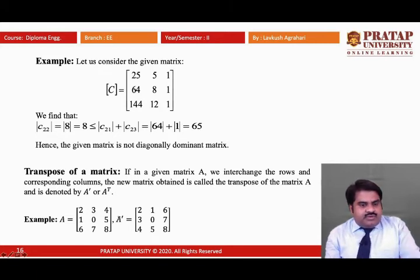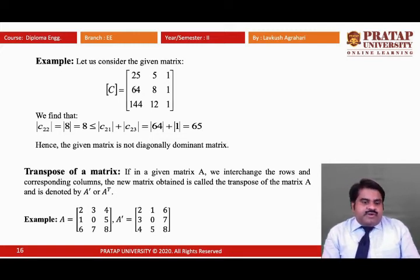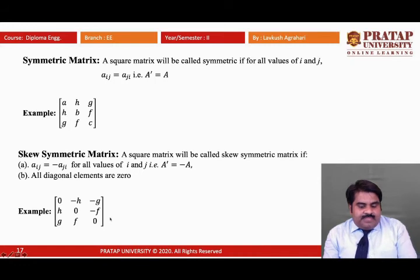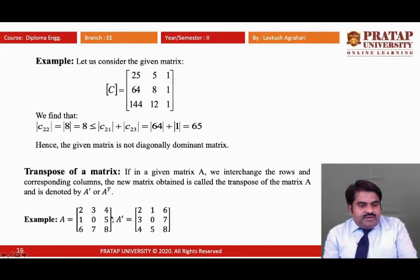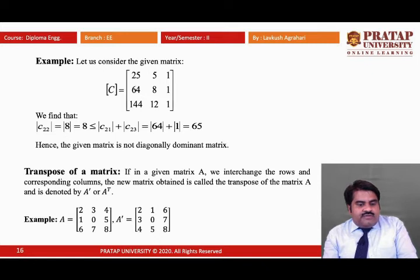Now, the transpose of a matrix. If in a given matrix we interchange the rows with the corresponding columns, the new matrix obtained is called the transpose of matrix A, denoted by AT or A'. In the example, we have a square matrix of order 3: the first row becomes the first column, the second row becomes the second column, and the third row becomes the third column — this new matrix is the transpose.